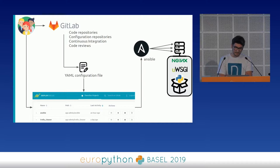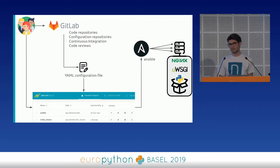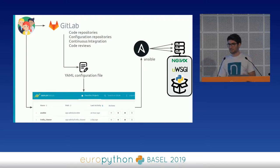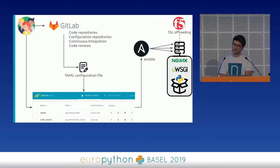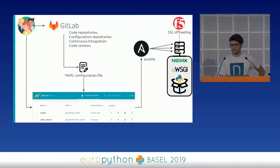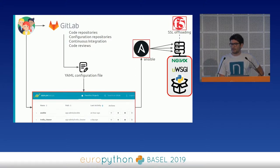The Ansible playbook connects to all the bare metal servers targeted and configured in the YAML configuration file, creating Python virtual environments, deploying the code inside, configuring uWSGI and nginx ingress configuration files across multiple servers in clusters. If the service is publicly accessible, we need the help of network engineers to set up F5 load balancers, which also act as SSL offloading proxies.